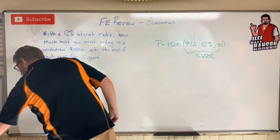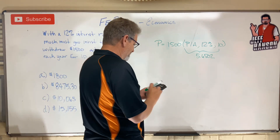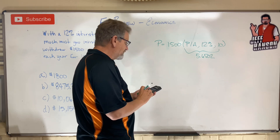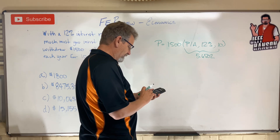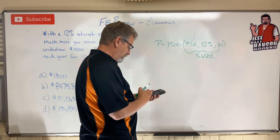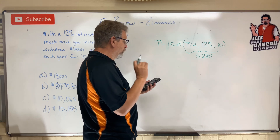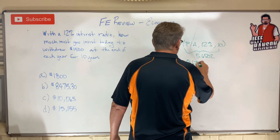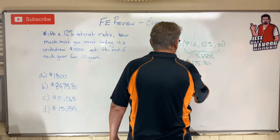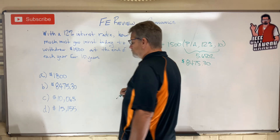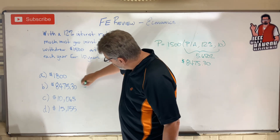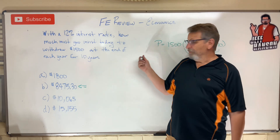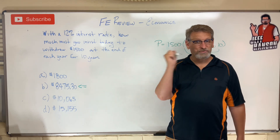Okay, put that in my calculator. 1,500 times 5.6502 equals $8,475.30. Is that one? Oh baby, here we go. All right, I hope you're remembering this economics stuff. Let's do another one.